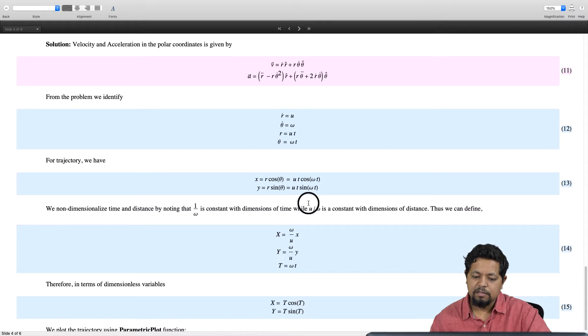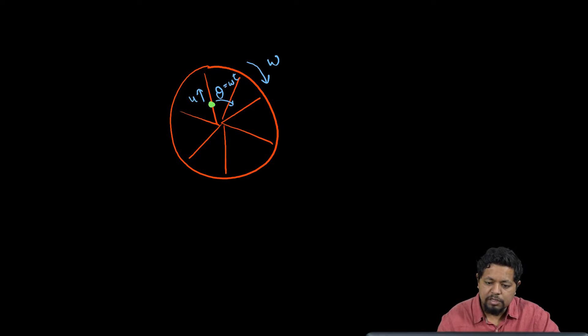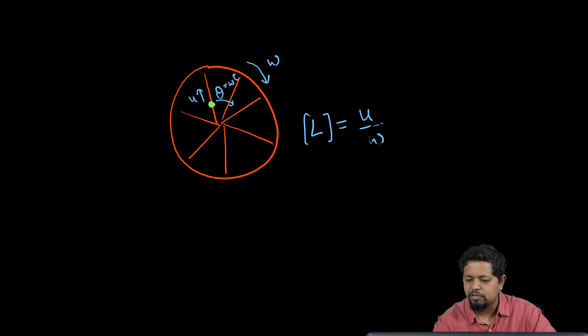The natural length scale: we have two constants u and omega, and we have to find the scale for time and length. Using u and omega, the dimensions of length are given by u by omega, which has dimensions of length and provides a natural scale for length.